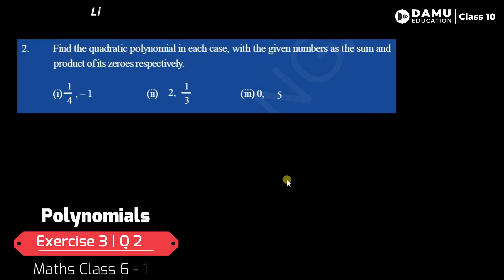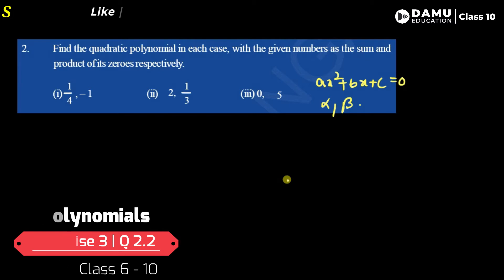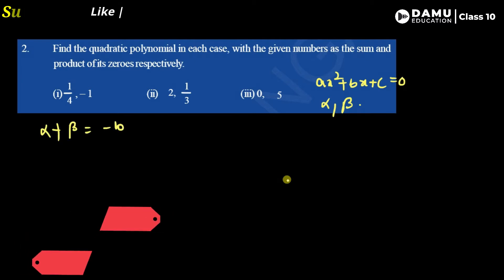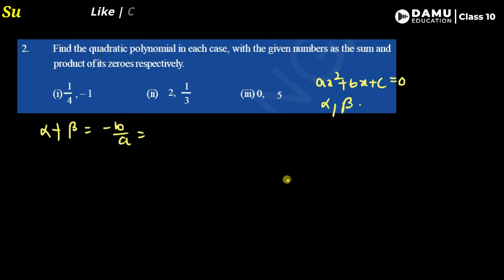We need to take the generalized form of the quadratic equation: ax squared plus bx plus c equals 0. Here, the two zeros are alpha and beta. Alpha plus beta equals minus b by a, which is the coefficient of x divided by coefficient of x squared, and that is equal to 2. Alpha times beta, the product, equals the constant term by coefficient of x squared, that is 1 by 3.